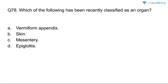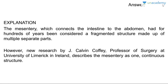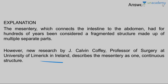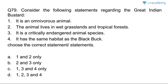Question seventy-eight: which of the following has recently been classified as an organ? The mesentery — a tissue connecting the intestine to the abdomen. For hundreds of years it was thought to be multiple separate parts, but new research by Professor J. Calvin Coffey of the University of Limerick in Ireland described the mesentery as one continuous structure, classifying it as an organ.